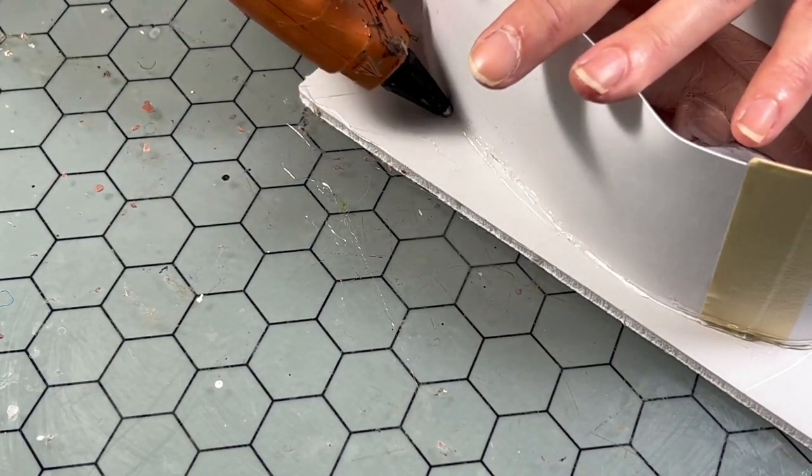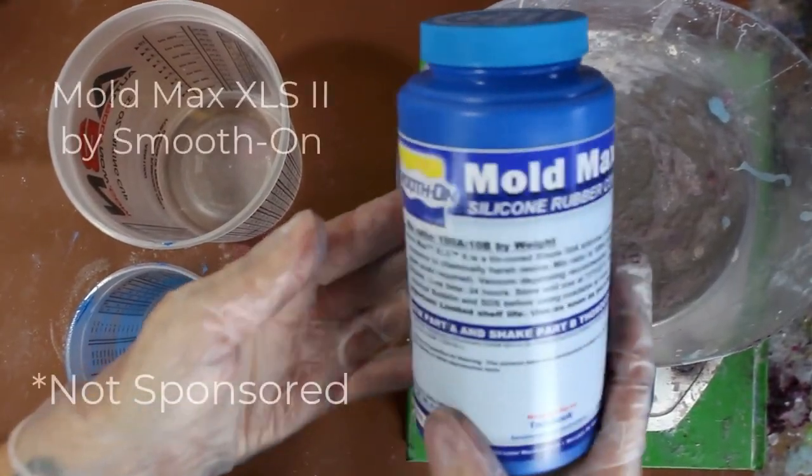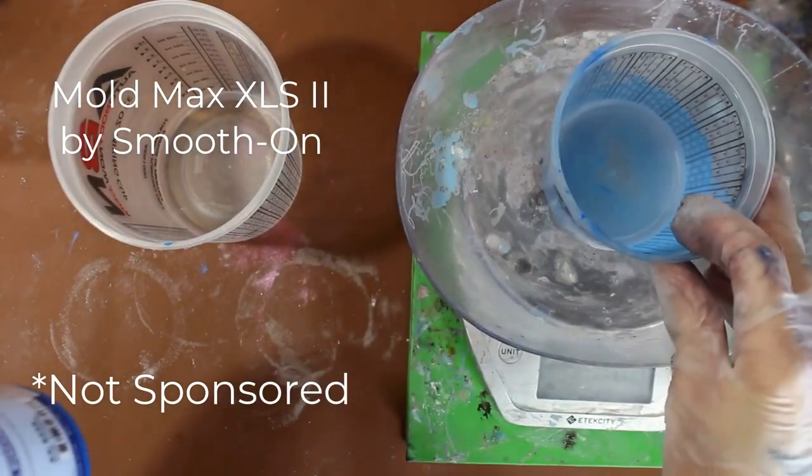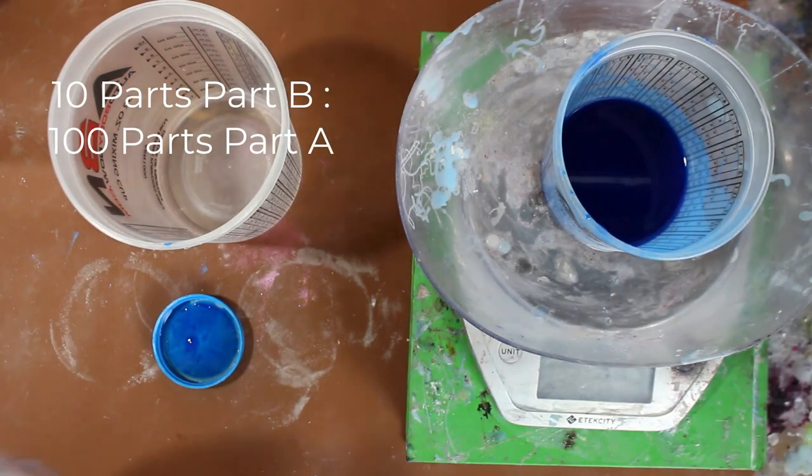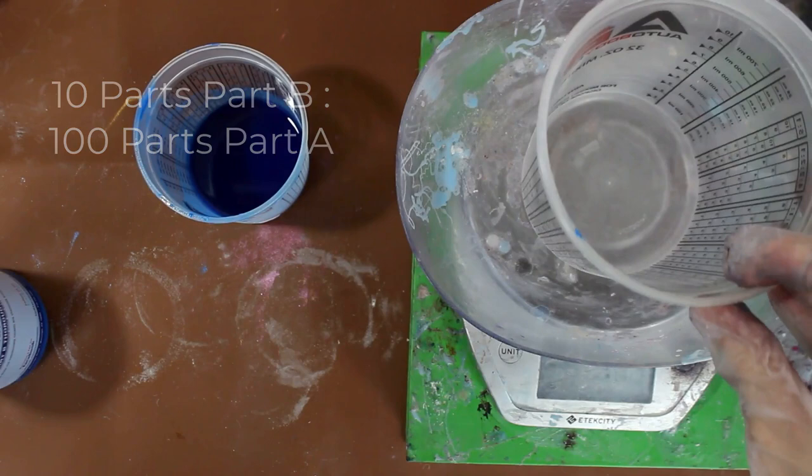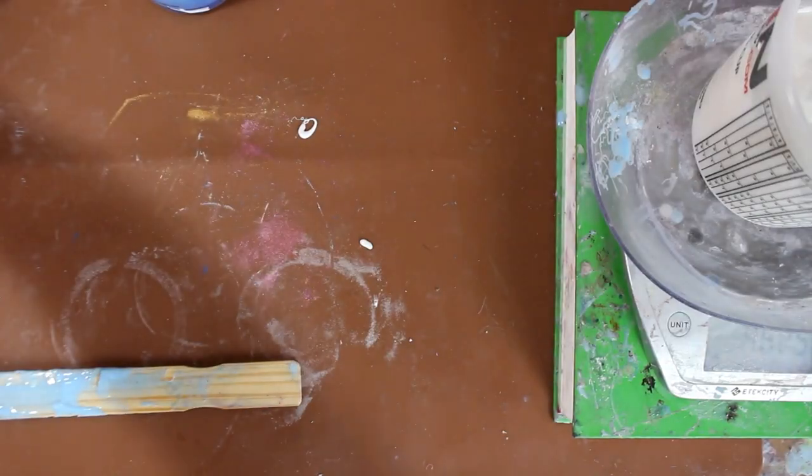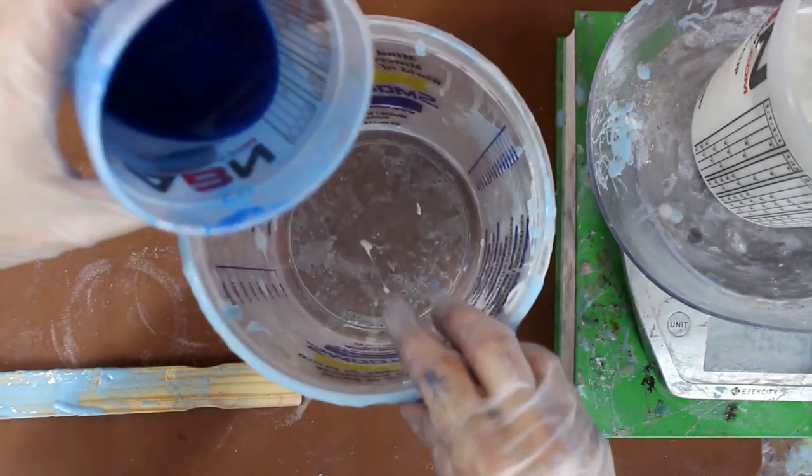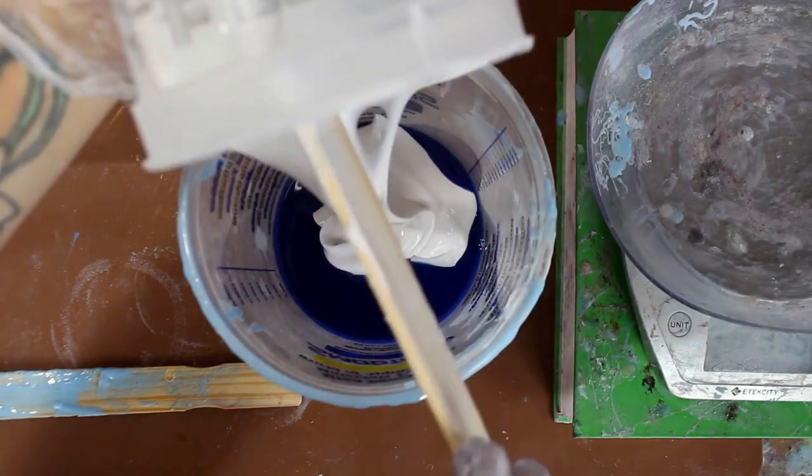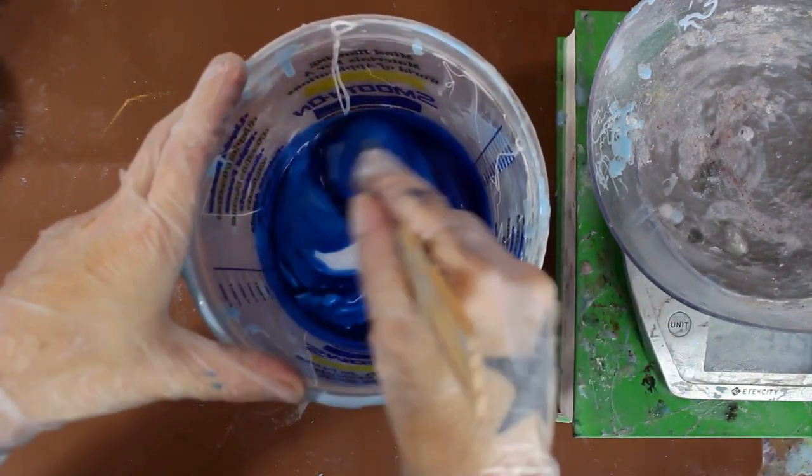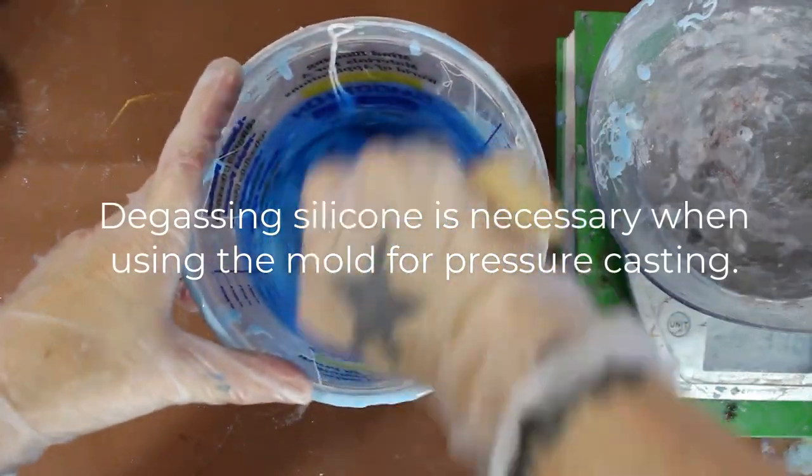And now we are ready for silicone. I used Moldmax XLS 2 which is really great for high volume casting. And just pour 10 parts of part B to 100 parts of part A. And then you take both and mix them together thoroughly. I like to mix for around 2 minutes or so. I don't show it here but once I'm done mixing I do place this into a vacuum chamber to remove all the air bubbles before pouring.